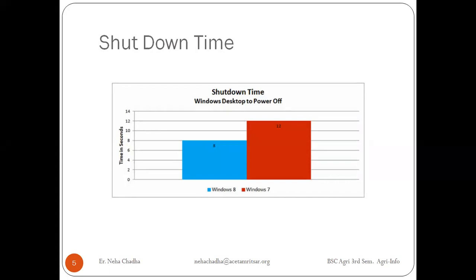We generally ask why there are versions of Windows, why there are so many operating systems — because there are some changes. Here you can find out there are changes in performance: when the window will start, when the window will shut down. There is some difference in time, even if it's just a few seconds, which affects the performance of any system or operating system.